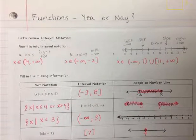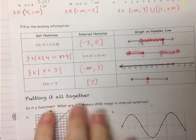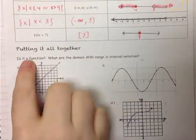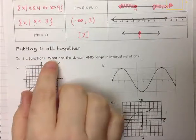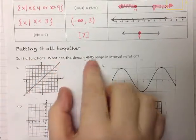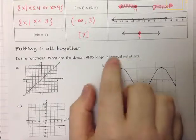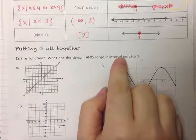This video is on functions — yay or nay. We're going to be putting everything together with functions: determining if a graph or table is a function, and then determining what the domain and range are in interval notation. Interval notation uses brackets with infinities, not inequalities.